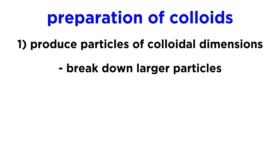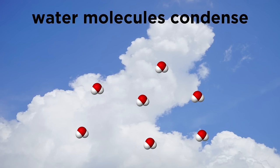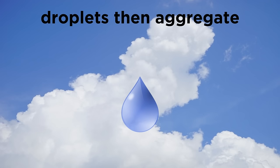The first is by breaking down larger particles. This is how many paint pigments are produced. The other way is by combining smaller molecules. This is how clouds form. Water molecules high up in the atmosphere where it gets very cold are able to condense enough to form tiny droplets that then aggregate.